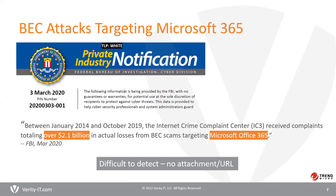There are a couple of different ways attackers do this. With email impersonation, the attacker sets up an email account that looks like the business email account. With email spoofing, the attacker modifies an email envelope and header, so the receiving mail server thinks the email came from the corporate domain, and the recipient's email client displays incorrect sender information.